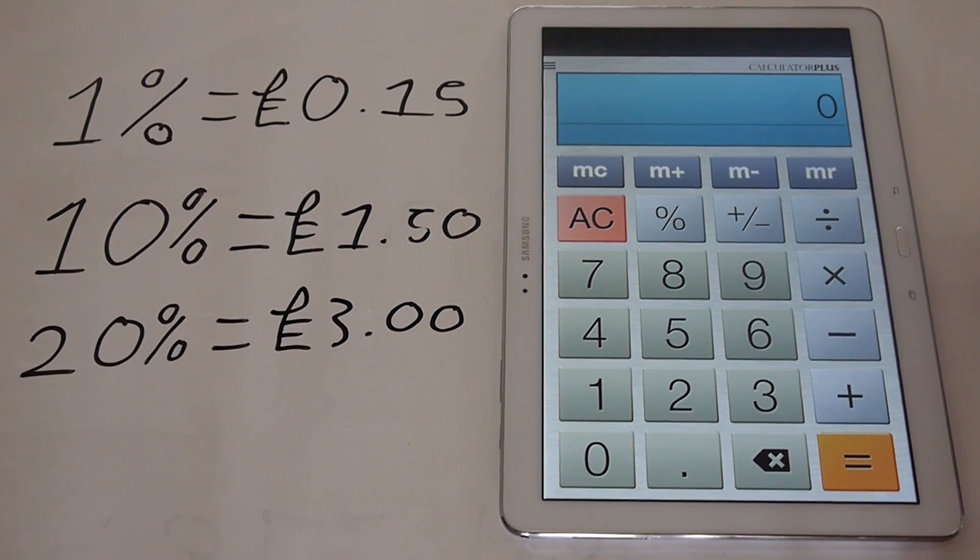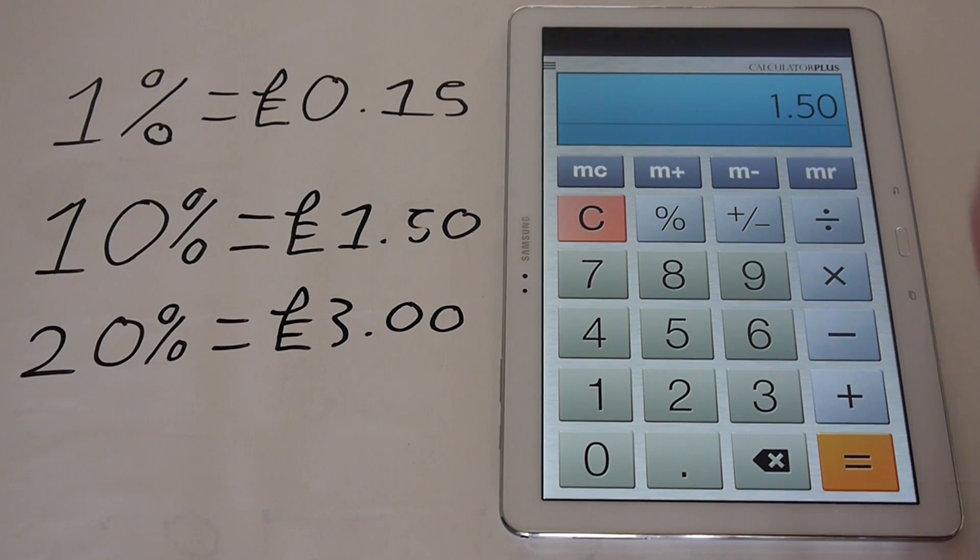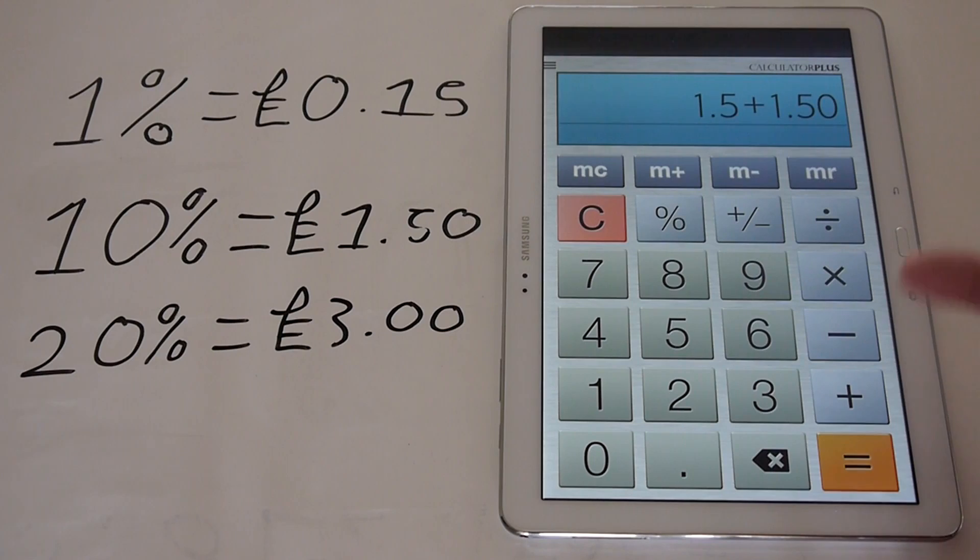But I said another way to do that is if 10% equals the 1.50, £1.50, we can just add that on again. If you add it on again, it's the same as multiplying it by 2. So 1.50 plus 1.50, which is £1.50 plus £1.50, equals £3.00.